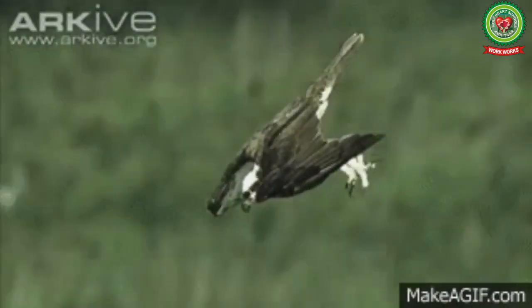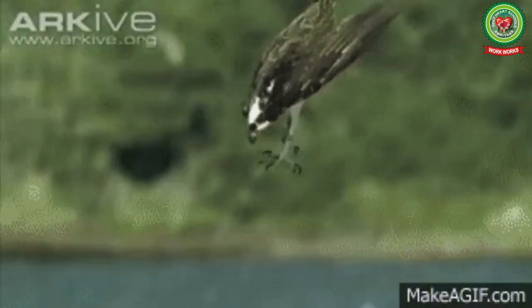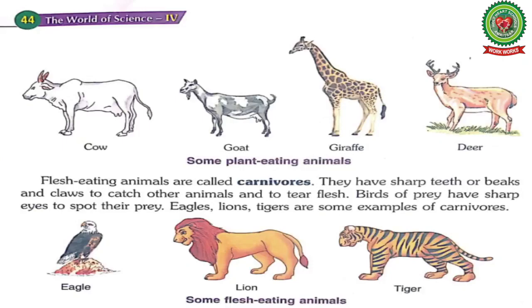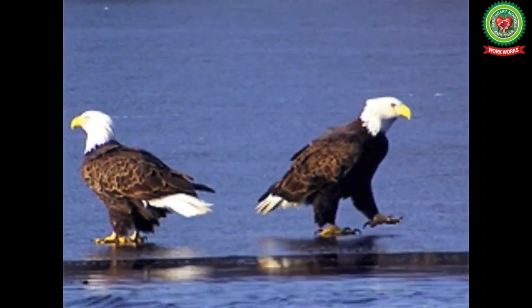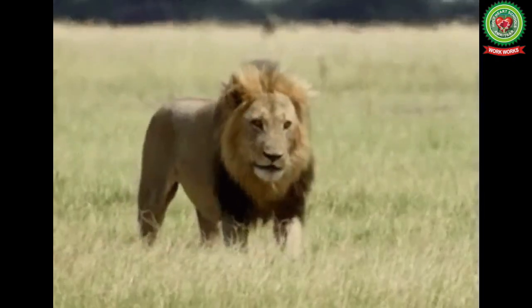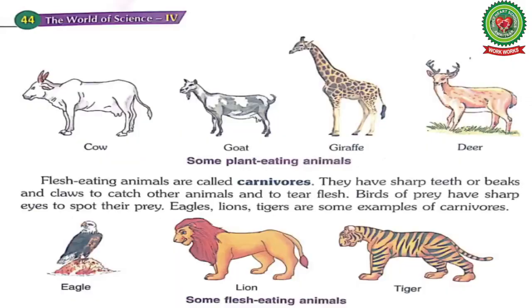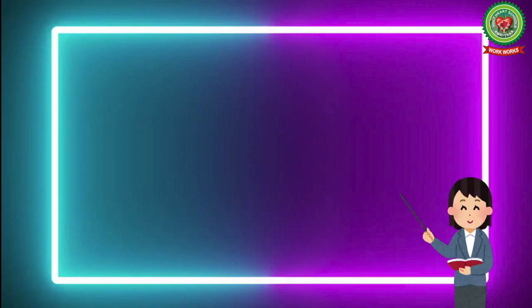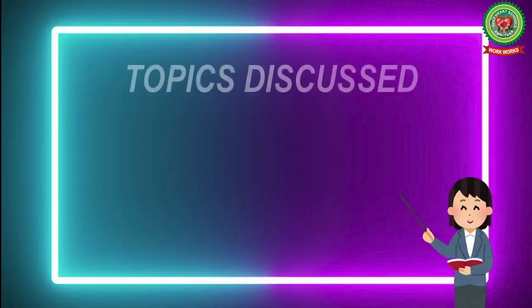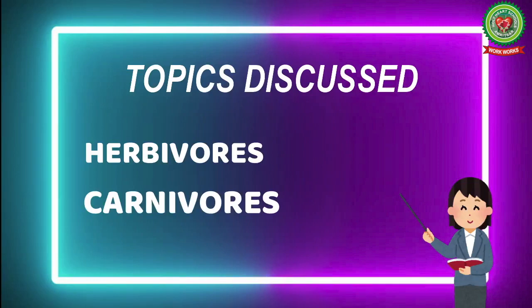Birds of prey have sharp eyes to spot their prey. The examples of carnivores are eagles, lions and tigers. In today's class I have discussed about herbivores and carnivores. Read and revise the topic thoroughly and also revise the cross questions. Thank you and have a nice day.